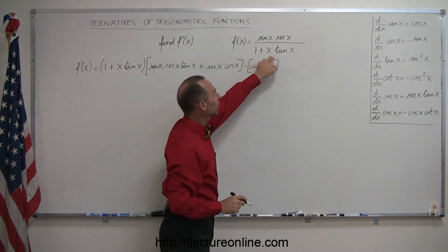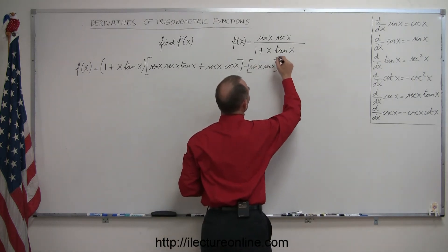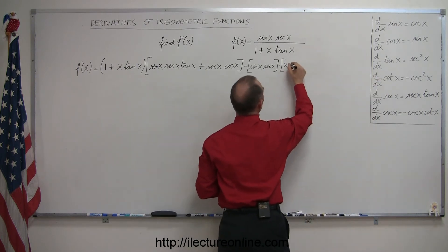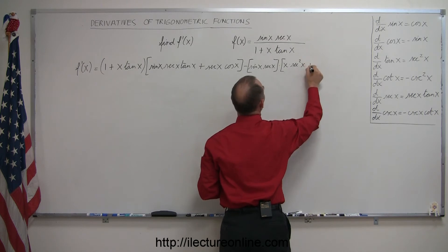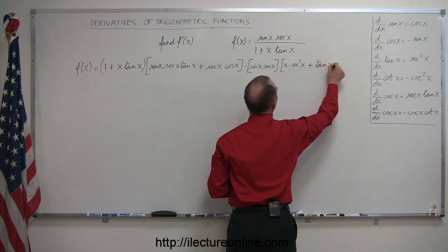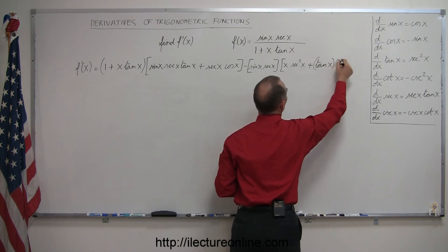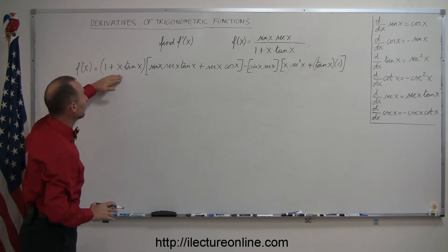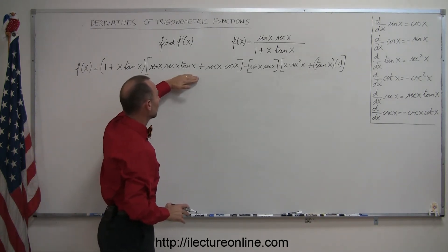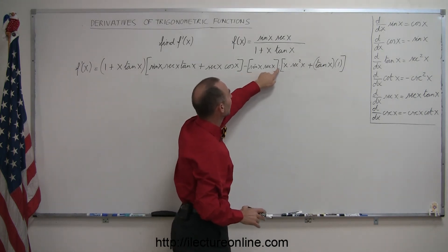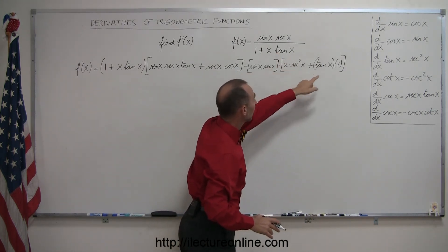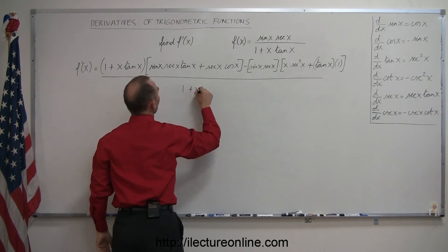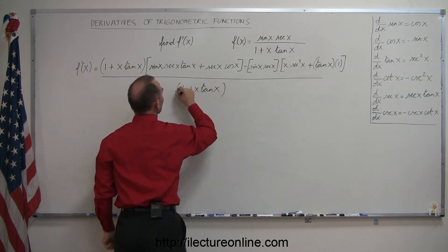The derivative of 1 is 0, and here we have a product, so we use the product rule: the first, x, times the derivative of the second, tangent of x, whose derivative is secant squared of x, plus the second, tangent of x, times the derivative of the first, which is 1. So it's the denominator times the derivative of the numerator, minus the numerator times the derivative of the denominator, all divided by the denominator squared, which is 1 plus x tangent of x, quantity squared.